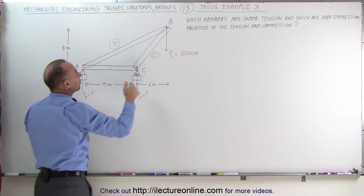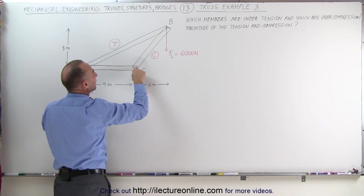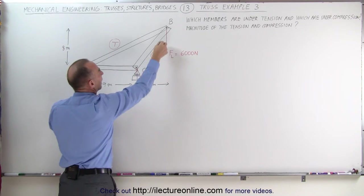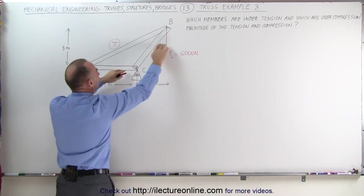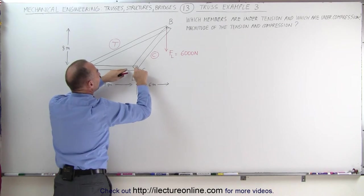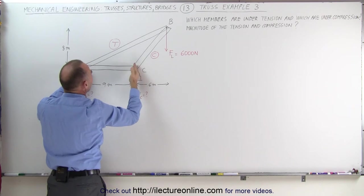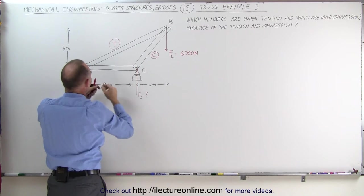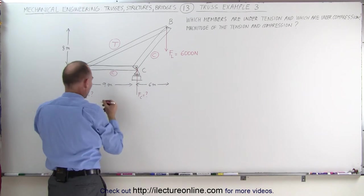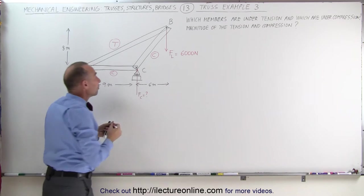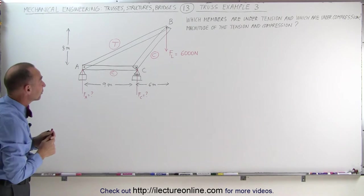And finally, we can see that if this pin was not connected here and the beam was able to slide in this direction, this pin is preventing this beam from sliding this way, which means it pushes this beam under compression. So now we've determined which beams are under compression and which are under tension.